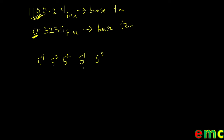Numbers that are after a decimal point — just like we have 0.214 here — their place values are, for example in base 5: 5 raised to the power of minus 1, 5 to the power of minus 2, and 5 to the power of minus 3.